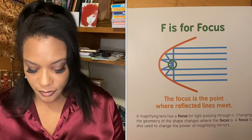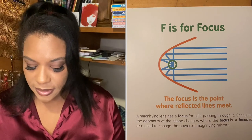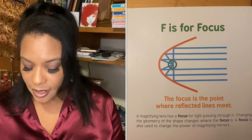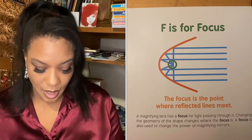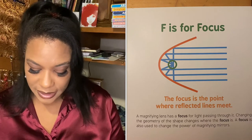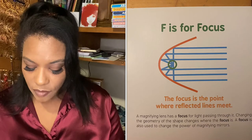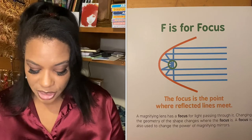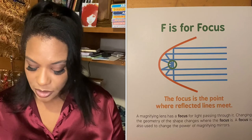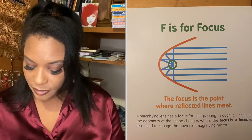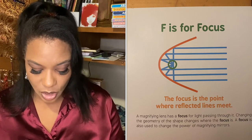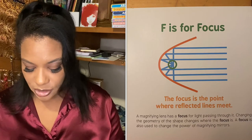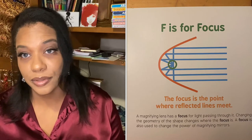F is for focus. The focus is the point where reflected lines meet. A magnifying lens has a focus for light passing through it. Changing the geometry of the shape changes where the focus is. A focus is also used to change the power of magnifying mirrors.